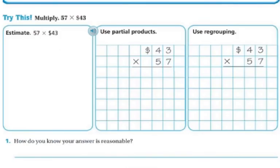They do want us to estimate, and it's just to make sure that our number is reasonable. So 57 is close to 60, and 43 is close to 40. Those are numbers I can do in my head. So 6 times 4 is 24, and then I have 1, 2 zeros. So my number should be close to 2,400.